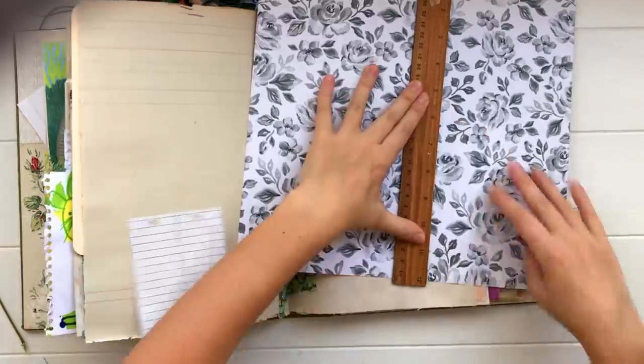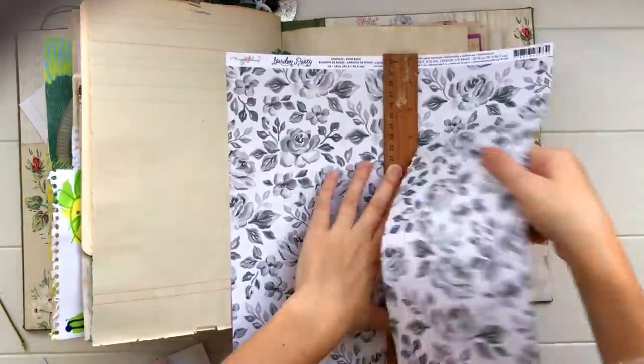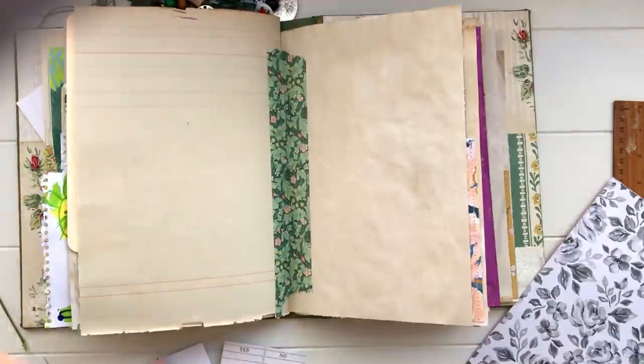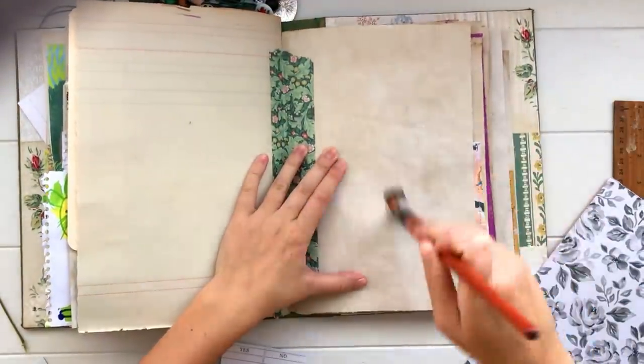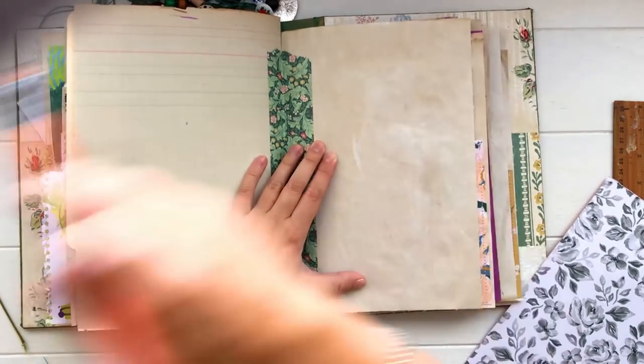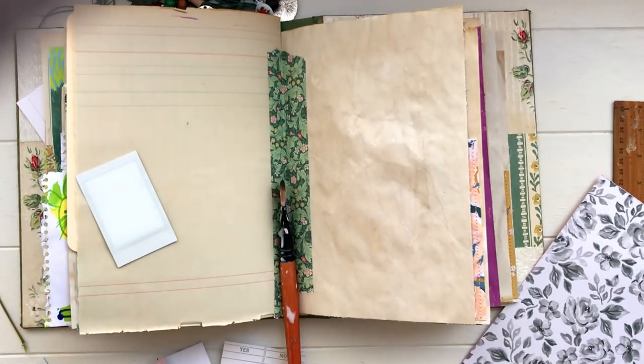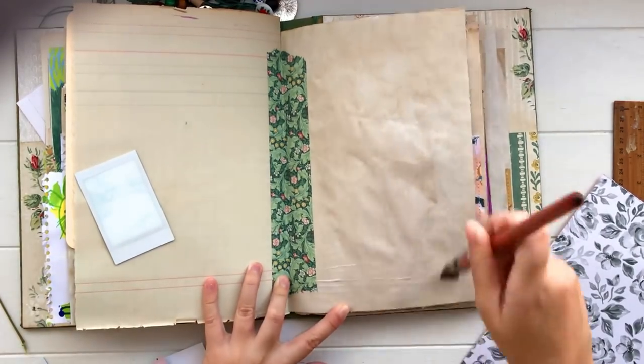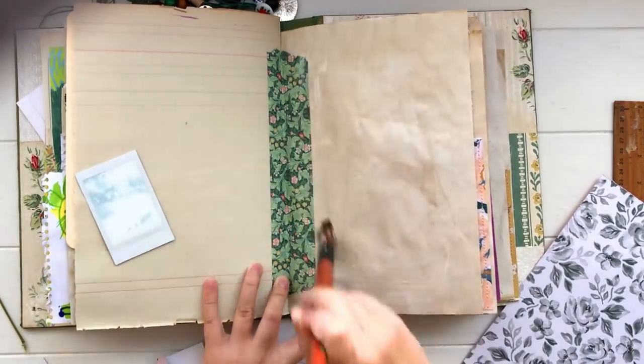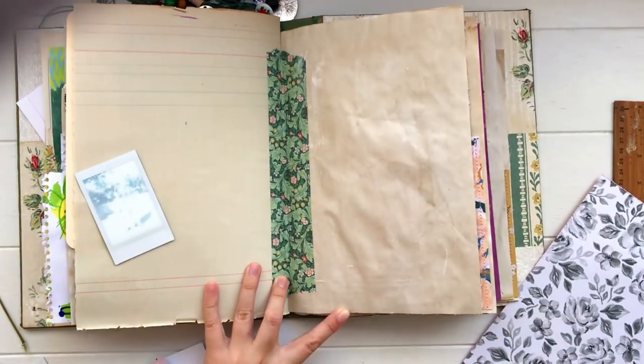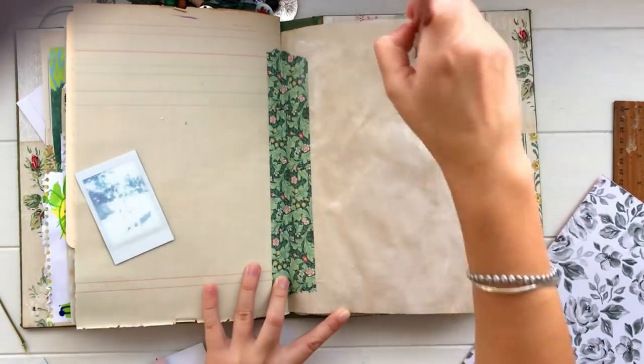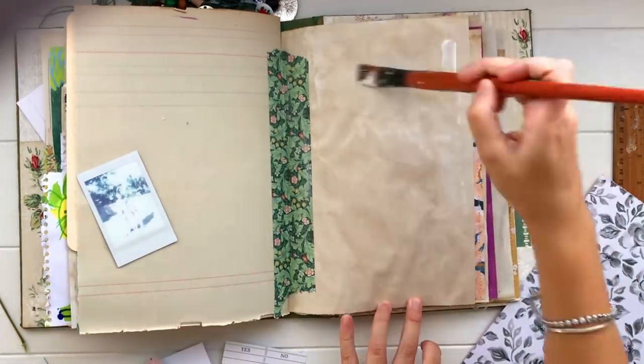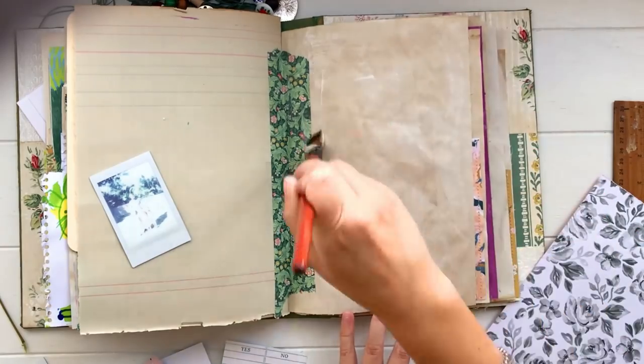Now I'm going to glue that paper down as a background. You can see here I've got an instax photo that's developing and I just took that as I was journaling. My kids and my husband were outside and I just took a quick photo of them together. I am going to end up incorporating that photo into the spread as well.